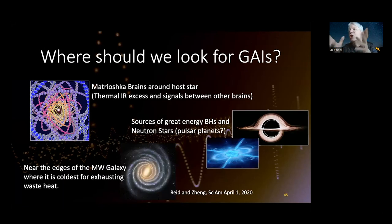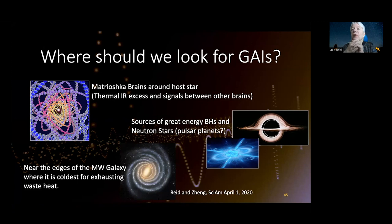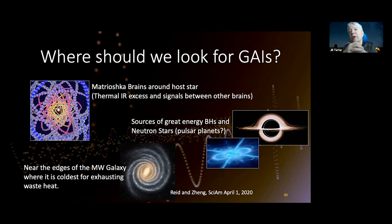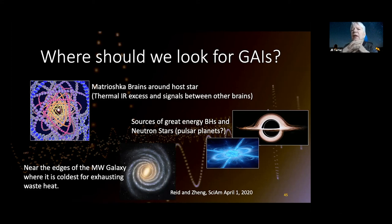This is generalized artificial intelligence. Where would we look for it? It needs an energy source, so it might surround a host star and you would see a thermal infrared excess. You would also expect to see signals between this Matryoshka brain and others. As you go out from the central source of energy, the next ring of computation would be powered by the heat loss from the inner ring. Where might these kinds of computational engines be placed? How about next to sources of a lot of energy, like black holes or neutron stars?